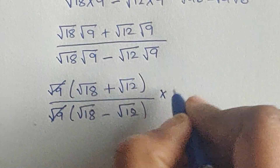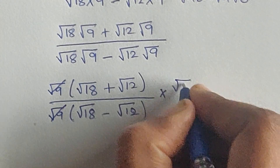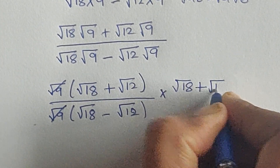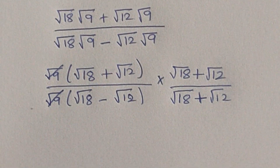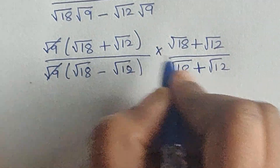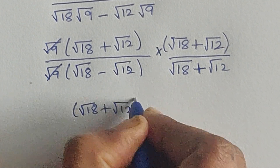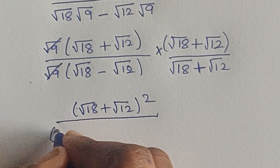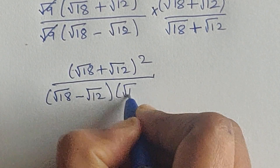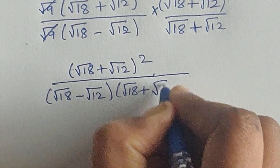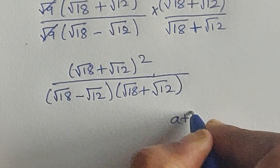Now we rationalize. Multiply both numerator and denominator by square root of 18 plus square root of 12. So the numerator becomes square root of 18 plus square root of 12, the whole quantity squared; and the denominator becomes square root of 18 minus square root of 12 times square root of 18 plus square root of 12.